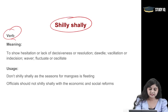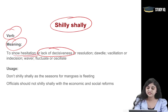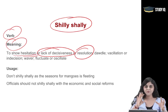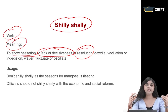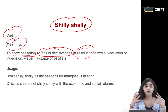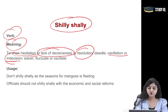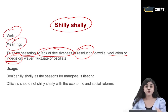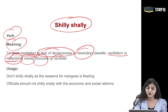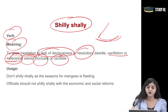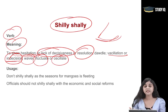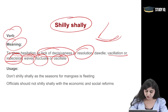Shillishalli, the verb, means to show hesitation or lack of decisiveness or resolution. That means you are actually oscillating — you are vacillating, not knowing what to do or not do, which is why you have double-mindedness, two kinds of thought processes. Vacillation or indecision — when you are not able to decide properly, when you are wavering, fluctuating or oscillating like a pendulum — when you are not able to decide on something, that is what we call shillishalli.